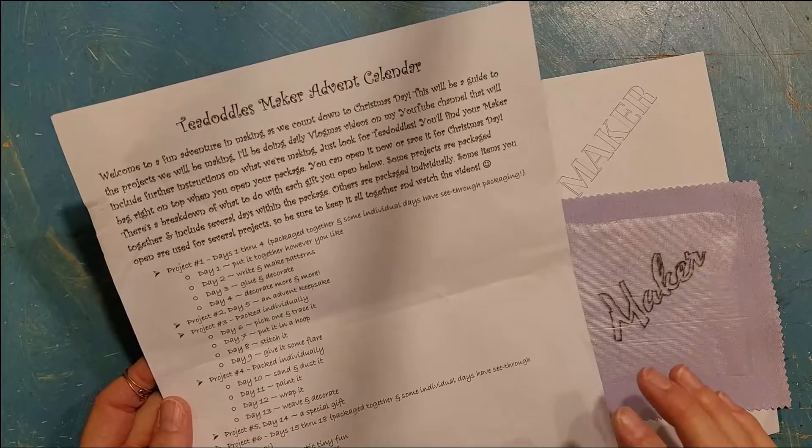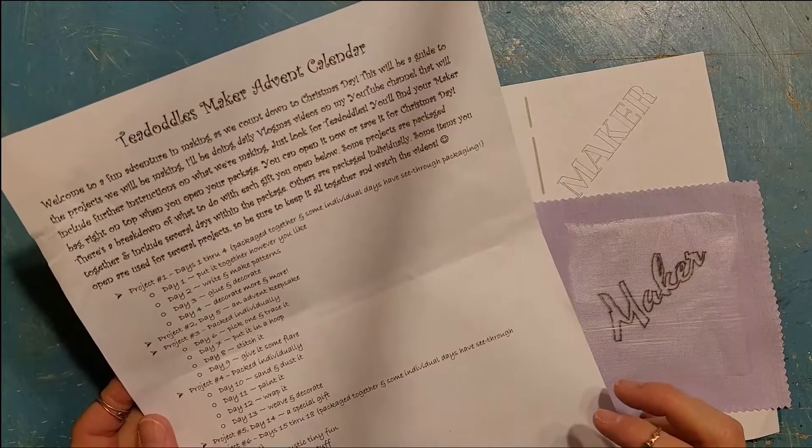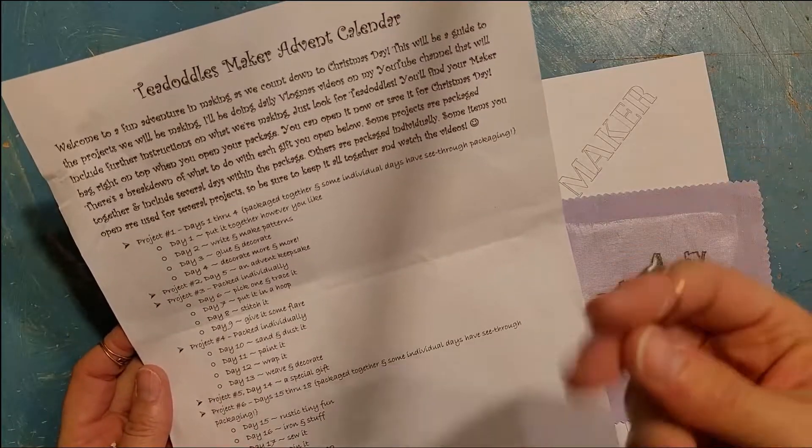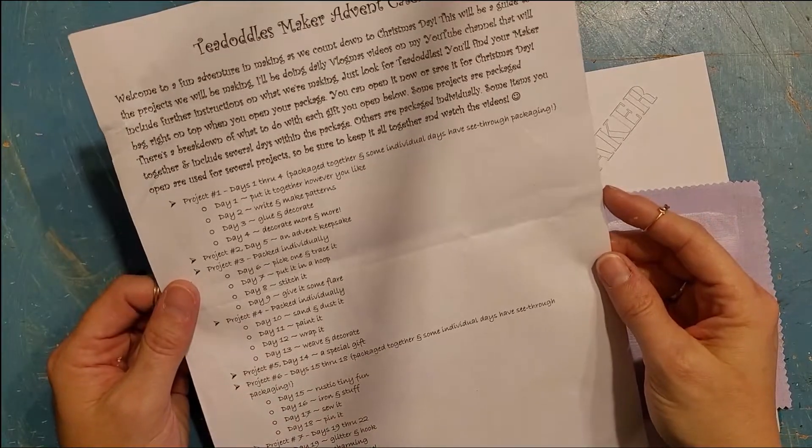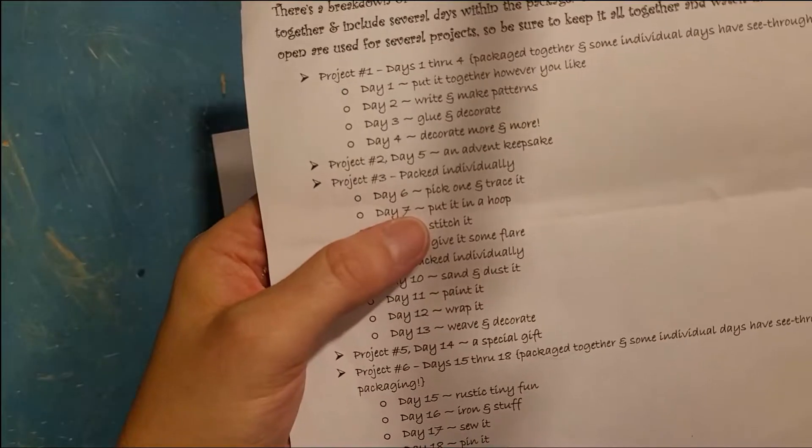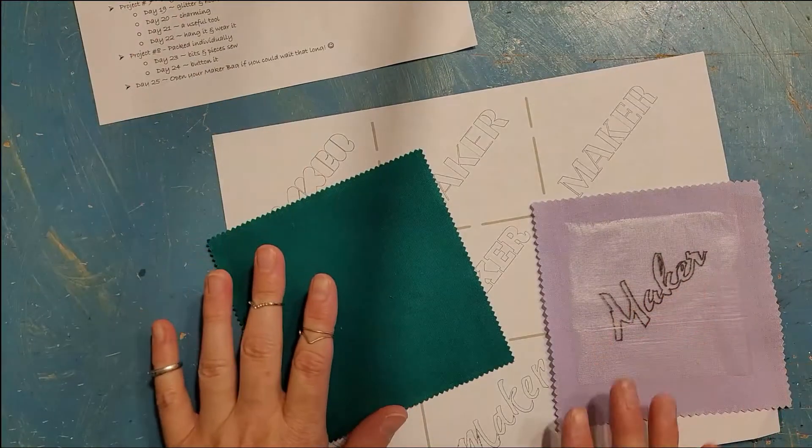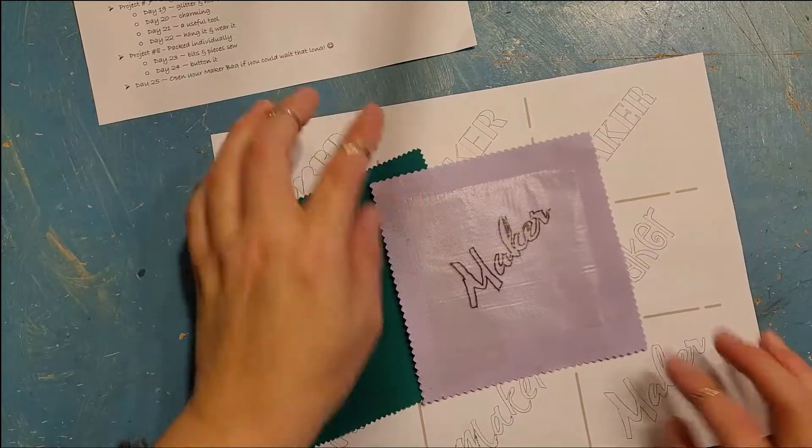Hey y'all, it's time for day seven of the maker advent calendar. This is Christy with Tea Doddles. So day seven says put it in a hoop. Okay, so yesterday we traced our choice of the word maker.